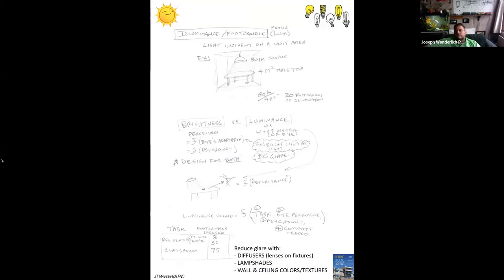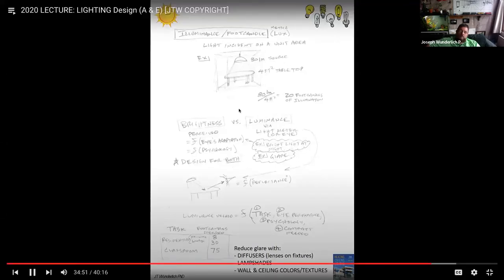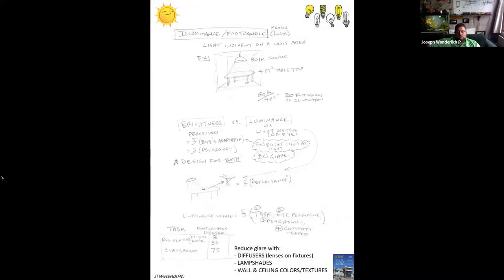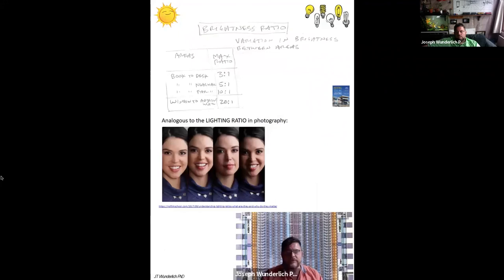Light distribution, this is sometimes written right on the box, certainly in the spec sheets from the manufacturers. Some other terminology you need to learn as architects, engineers, certainly as illumination engineering consultants. Illumination, illuminance, foot candle, lux. Light incident on a unit area, especially for task lighting. Brightness versus luminance. Luminance is what the light meter or your eye measures versus brightness, which is perceived function of the eyes' adaptation and psychology of it.